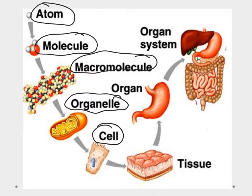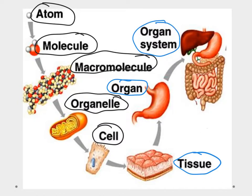A bunch of cells working together forms a tissue. A bunch of tissues working together gives us an organ. A bunch of organs working together gives us an organ system, and ultimately that takes us to the organism itself. So we start small with the atom and work all the way up to the organism.